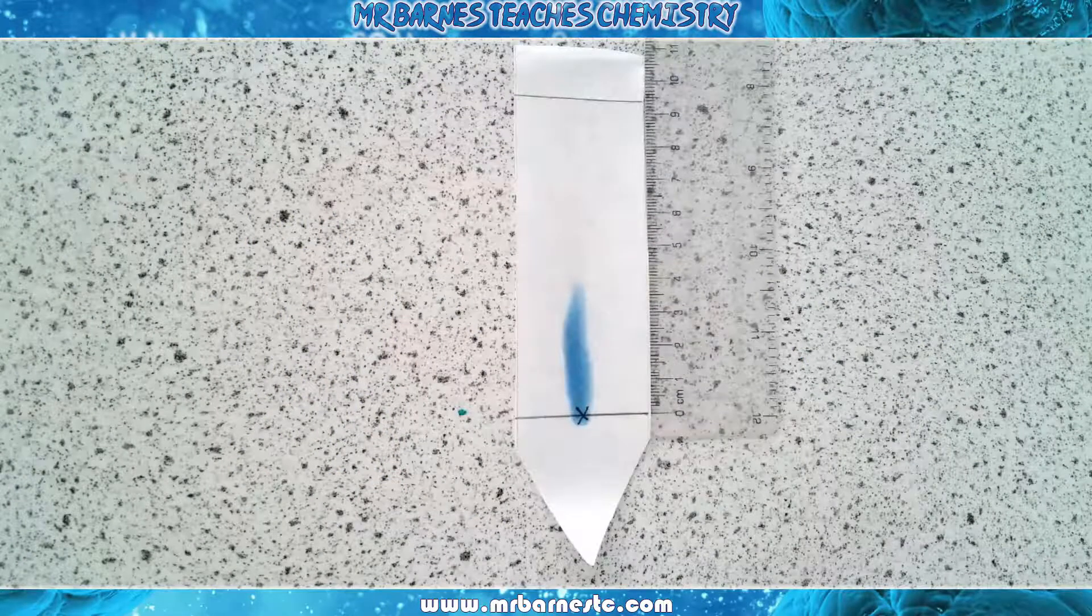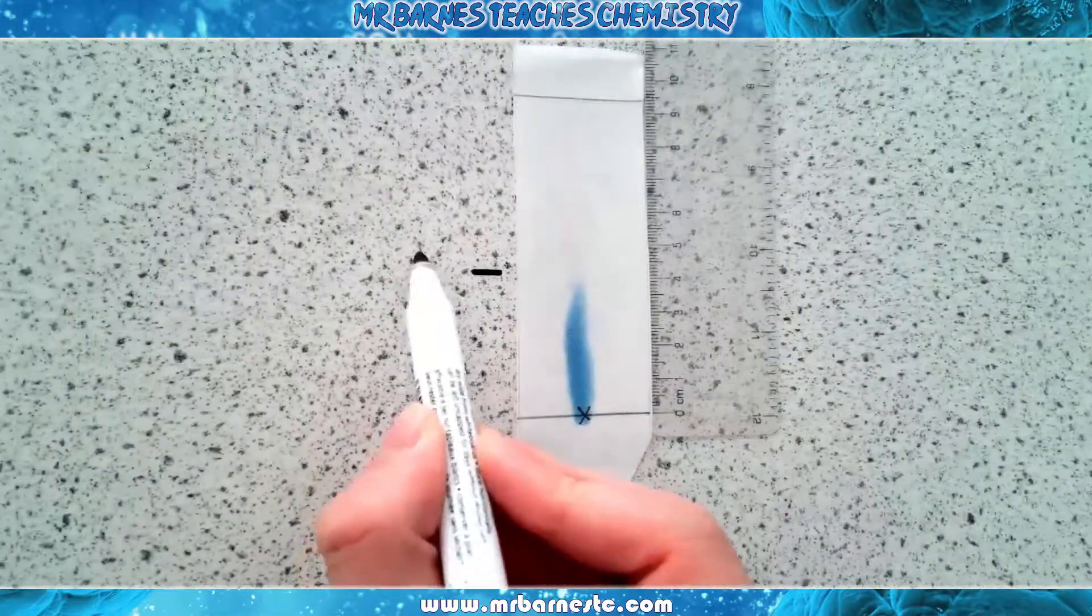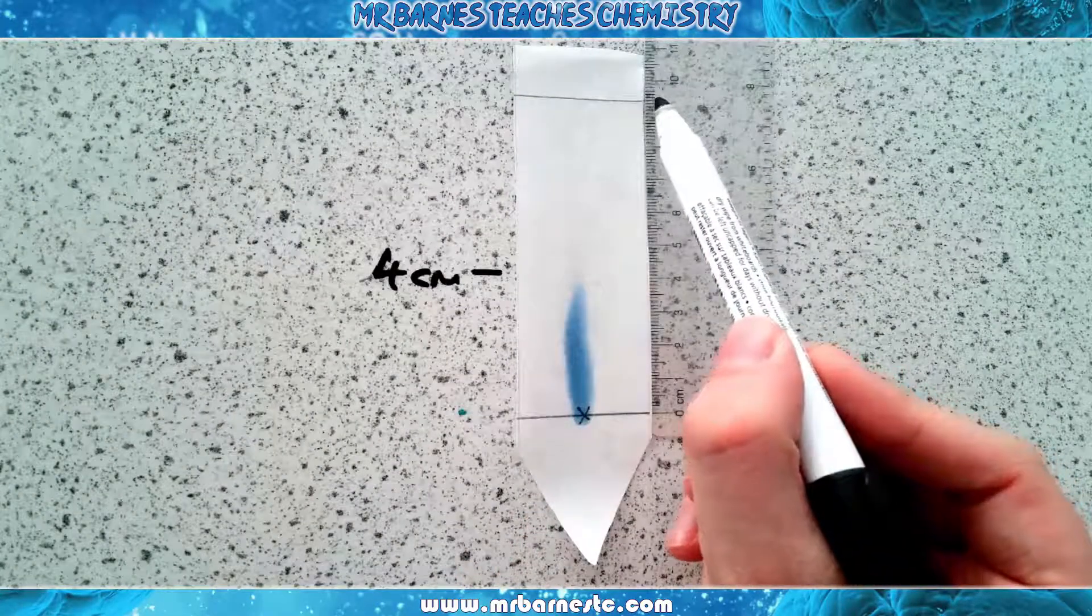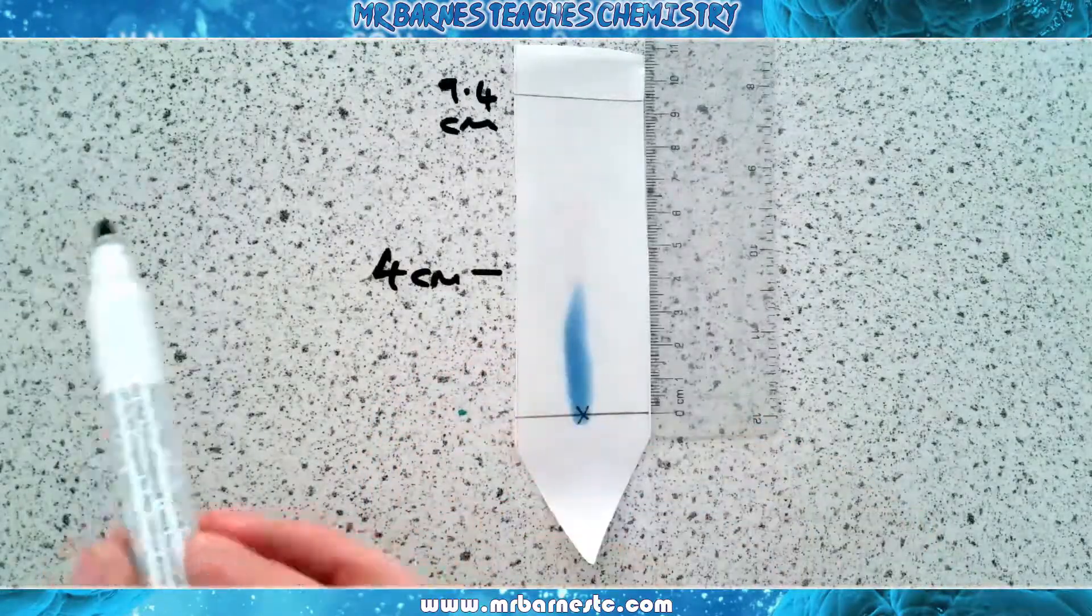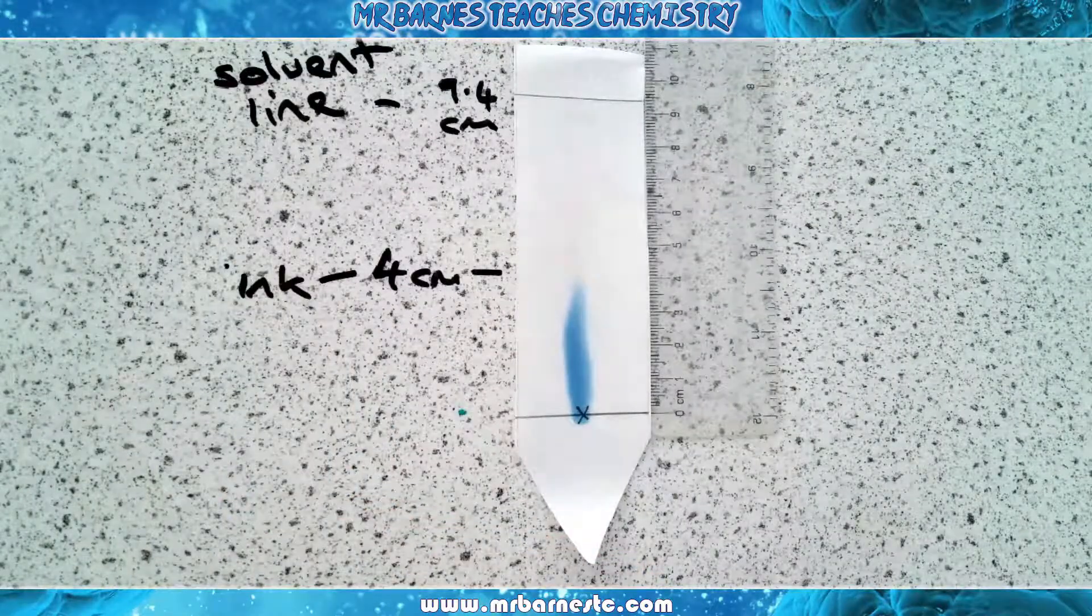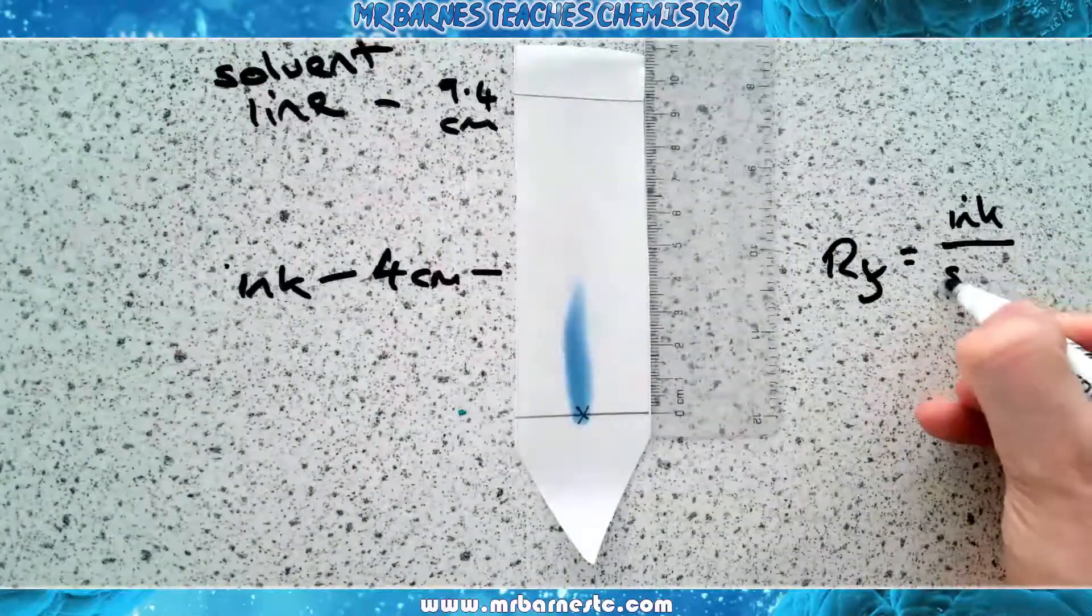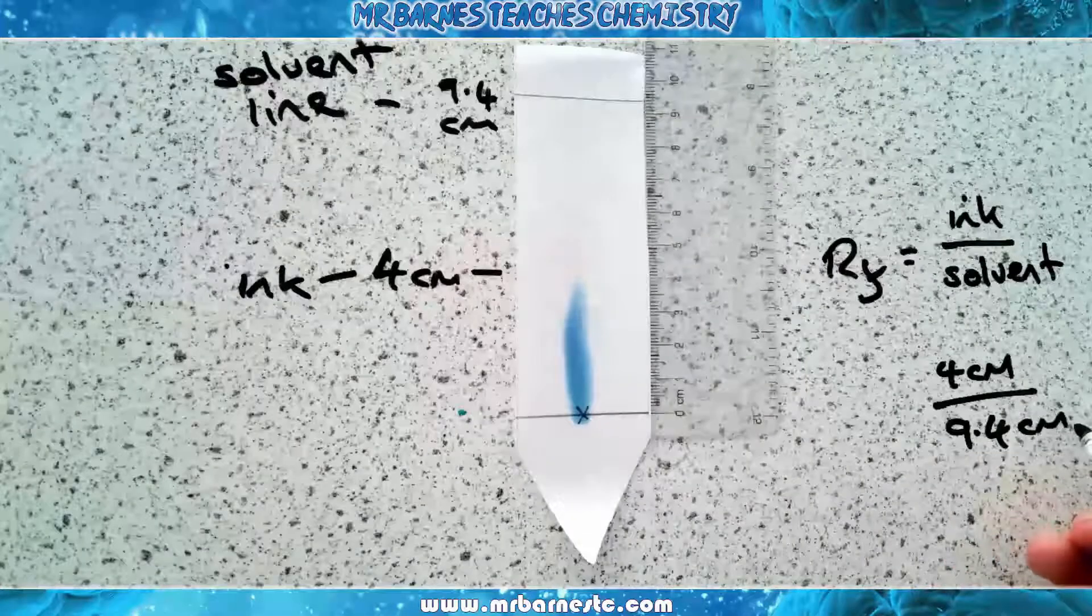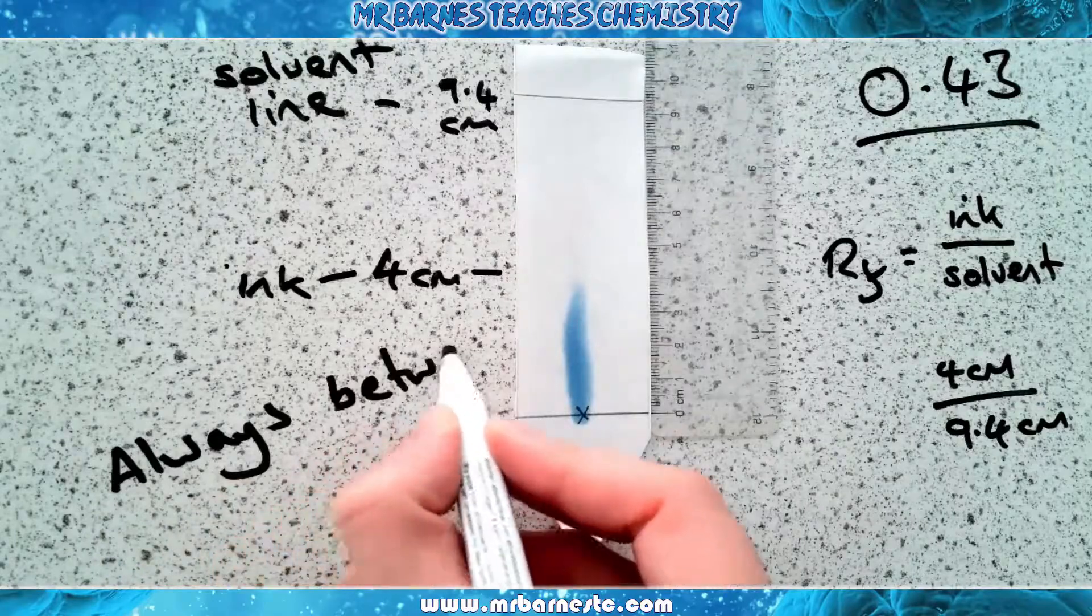If I have a look at a real life example, this is a chromatogram that I've produced in my lab. You can see here that my ink has moved four centimeters up the paper from my line and my water, which I've drawn in in pencil, that has moved 9.4 centimeters. So I've got my solvent line of 9.4, my ink line of four centimeters. How do you work out the retention factor? You take the distance the ink has moved and divide it by the distance the solvent has moved. So four divided by 9.4, and that comes out to 0.43, again always between zero and one.